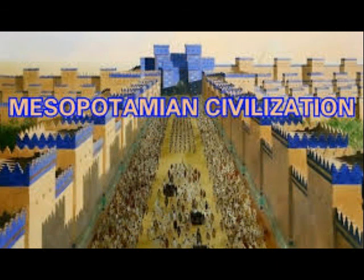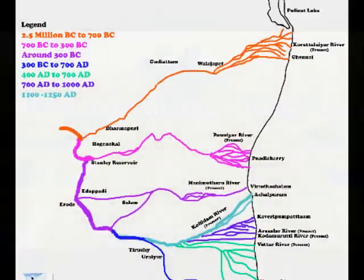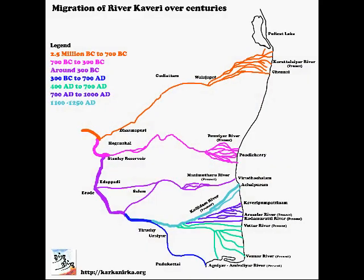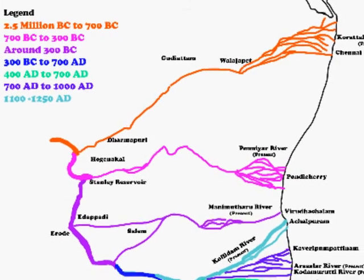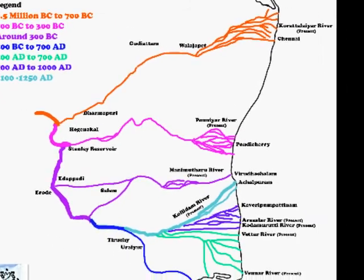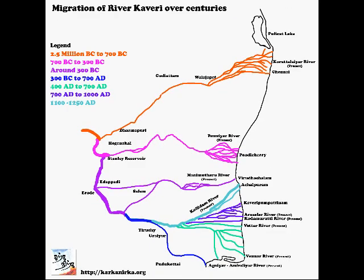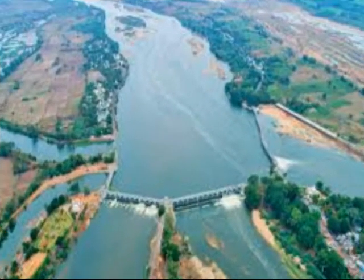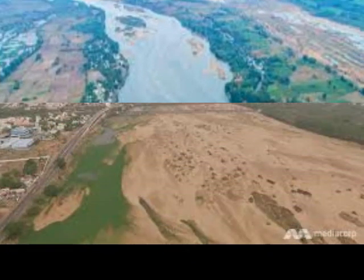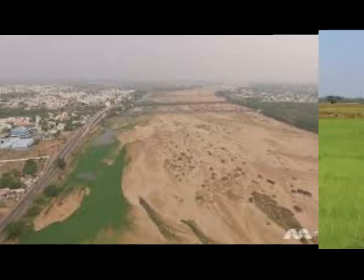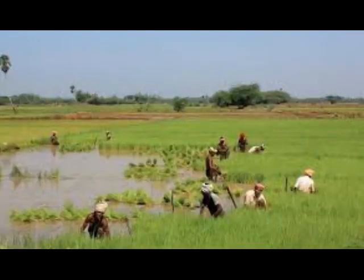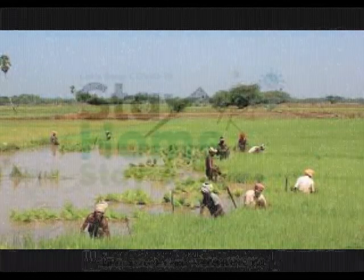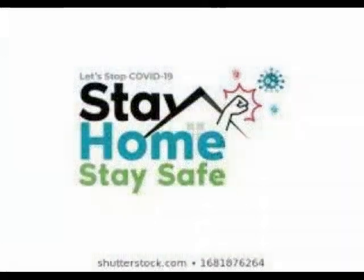The oldest civilizations like the Mesopotamian and the Indus civilization developed in river plains. The Indo-Gangetic plains in North India is one of the largest plains in the world. The plains formed by river Kaveri and Vaigai are important plains found in Tamil Nadu. Thank you dear children, stay home, stay safe.